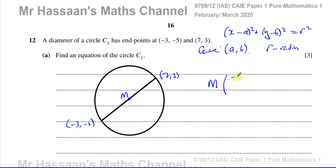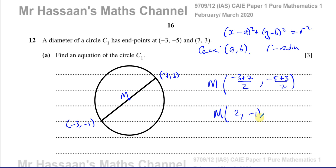The midpoint calculation gives us minus 3 plus 7 divided by 2 for the x coordinate, and negative 5 plus 3 divided by 2 for the y coordinate. That gives us 4 over 2, which is 2, and minus 2 over 2, which is negative 1. So the center of the circle is at coordinates 2, negative 1, giving us the values of a and b.